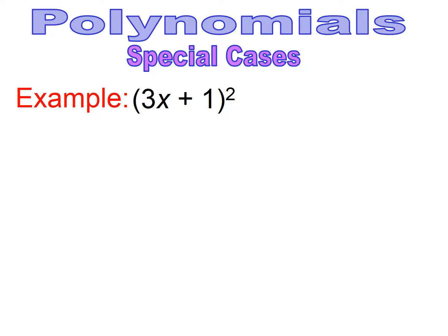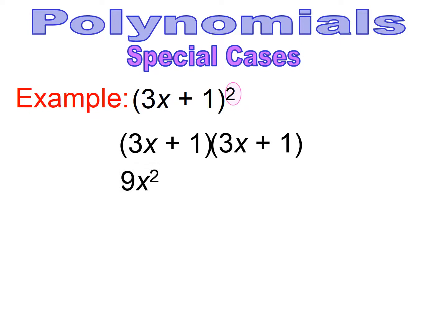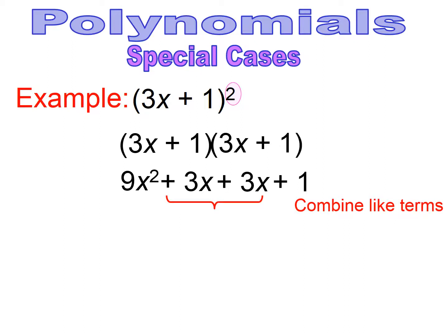Now we're going to work with a special case: a squared binomial. A squared binomial means I have two of these binomials being multiplied together. That square on the outside does not just get applied to everything inside — it means I have two of these binomials. So it's very important that when you're doing a squared binomial, you write the binomial twice and multiply through. So 3x times 3x gives us 9x squared, 3x times 1 gives 3x, 1 times 3x is 3x, and 1 times 1 is 1. Combining like terms gives 9x squared plus 6x plus 1.